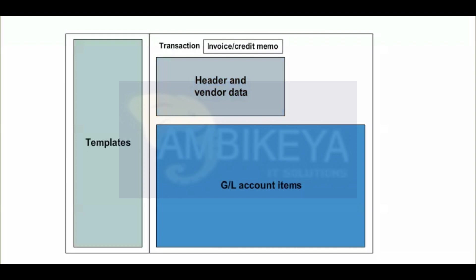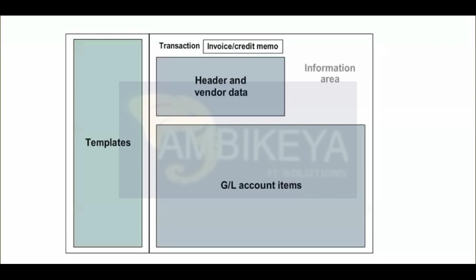Header and Vendor Data: Document Header and Vendor Line Item Data is entered here. General Ledger Account Items: the general ledger line items for the document are entered here. Information Area: the document balance and information about the vendor is displayed here.